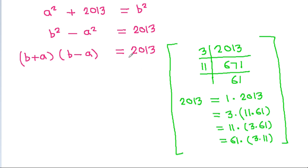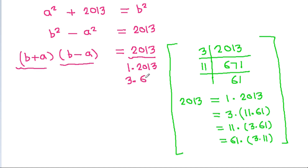So 2013 is a product of two integers. It is 1 times 2013, 3 times 671, and 11 times 183. And 11 times 3 times 61 is 183, and 61 times 3 times 11 is 33.